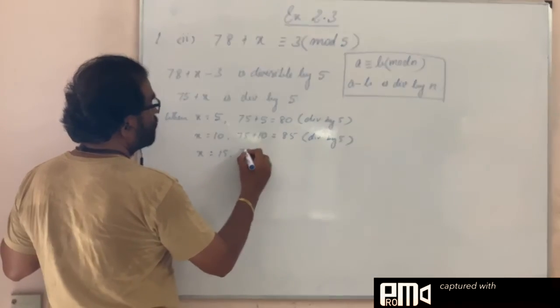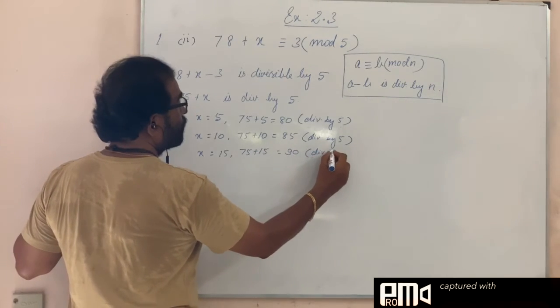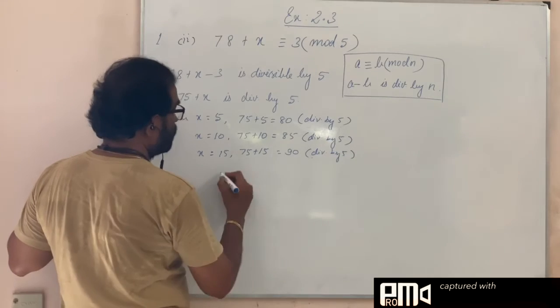So this is 15. So 75 + 15 = 90, again divisible by 5, and so on.